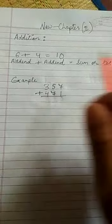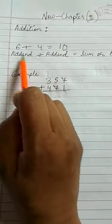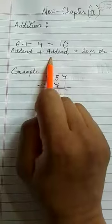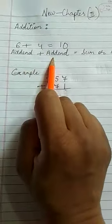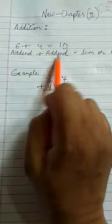What is 6 called? It's called the addend. And what's 4 called? It's an addend. So what is an addend? Any number which you add is called the addend. Whichever number you add is called the addend. And the result which we get is called the sum or total. So let's do one example.